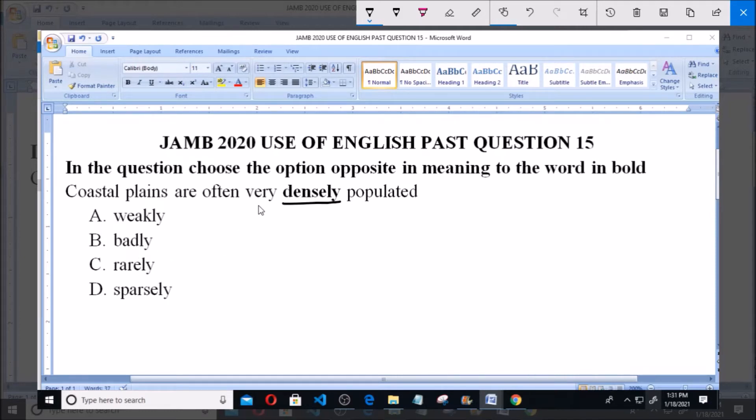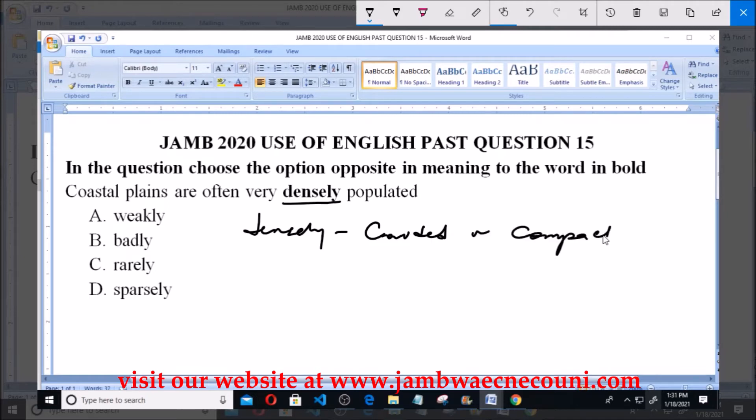When you say coastal plains are often very densely populated, the word densely here in this sentence simply represents crowded or compact. That is, it is very populated. Now let's explore the options.